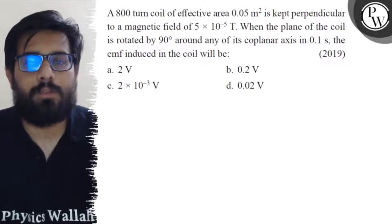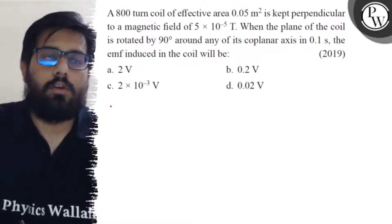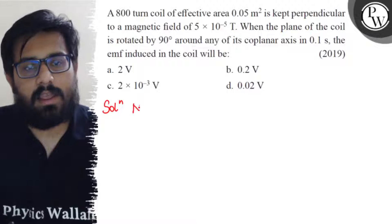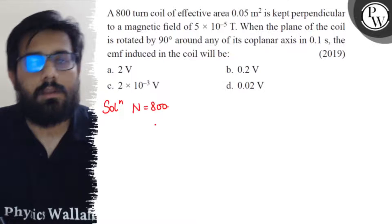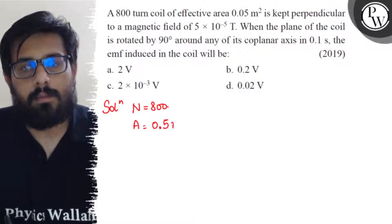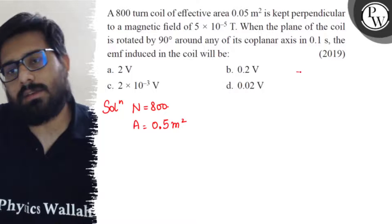Your first option is 2 volt, second option 0.2 volt, third option is 2 × 10⁻³ volt, and your fourth option is 0.02 volt. So here in this question the number of turns is given as 800, having area of 0.5 meter square, and it is kept perpendicular to the magnetic field.